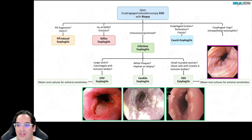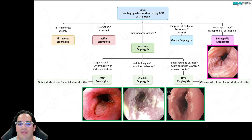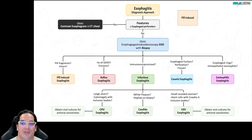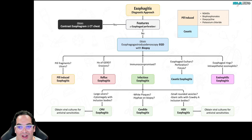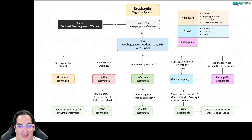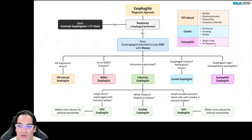Do you see esophageal eschars, perforation, or fistula? That's caustic esophagitis — the one to be most scared of. Lastly, do you see esophageal rings with mucosal fragility and intraepithelial eosinophils on biopsy? That's classic for eosinophilic esophagitis. A high-yield fact: these patients tend to be resistant to PPIs and still complain of dysphagia and odynophagia despite treatment — PPI resistance is classic.